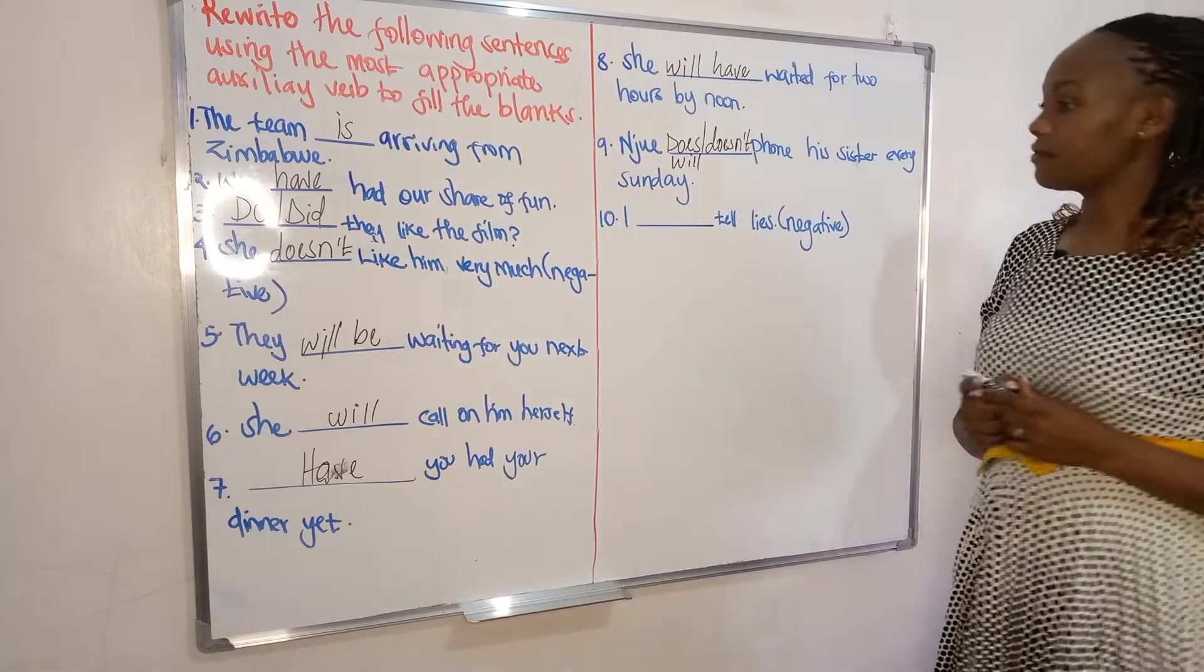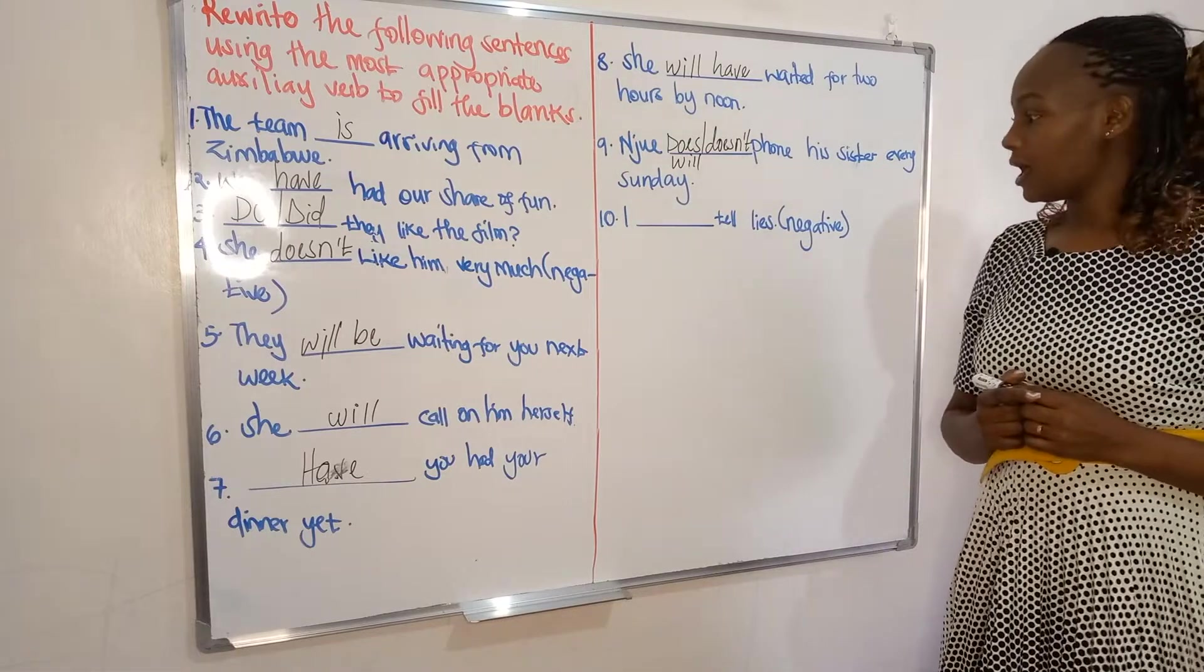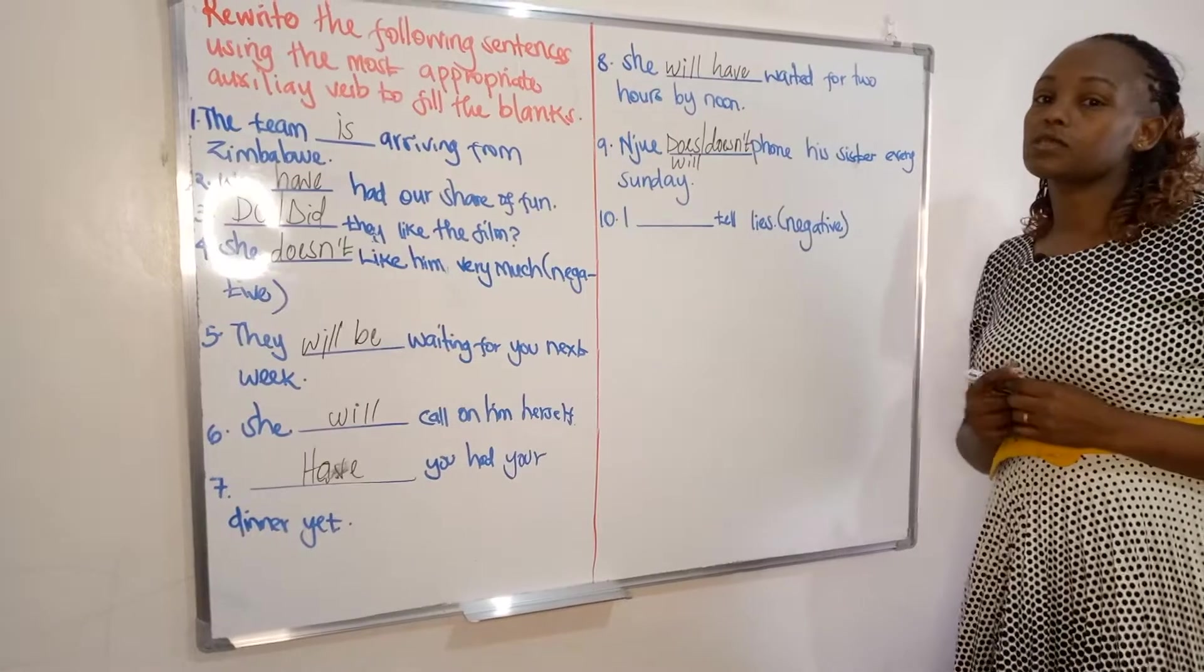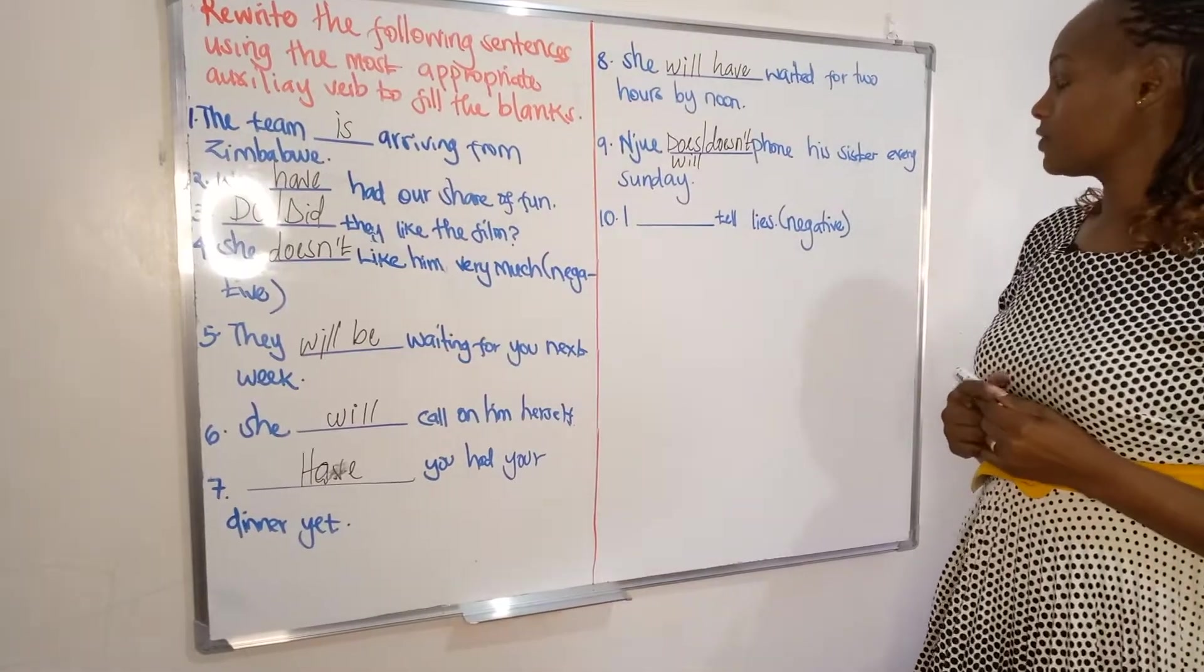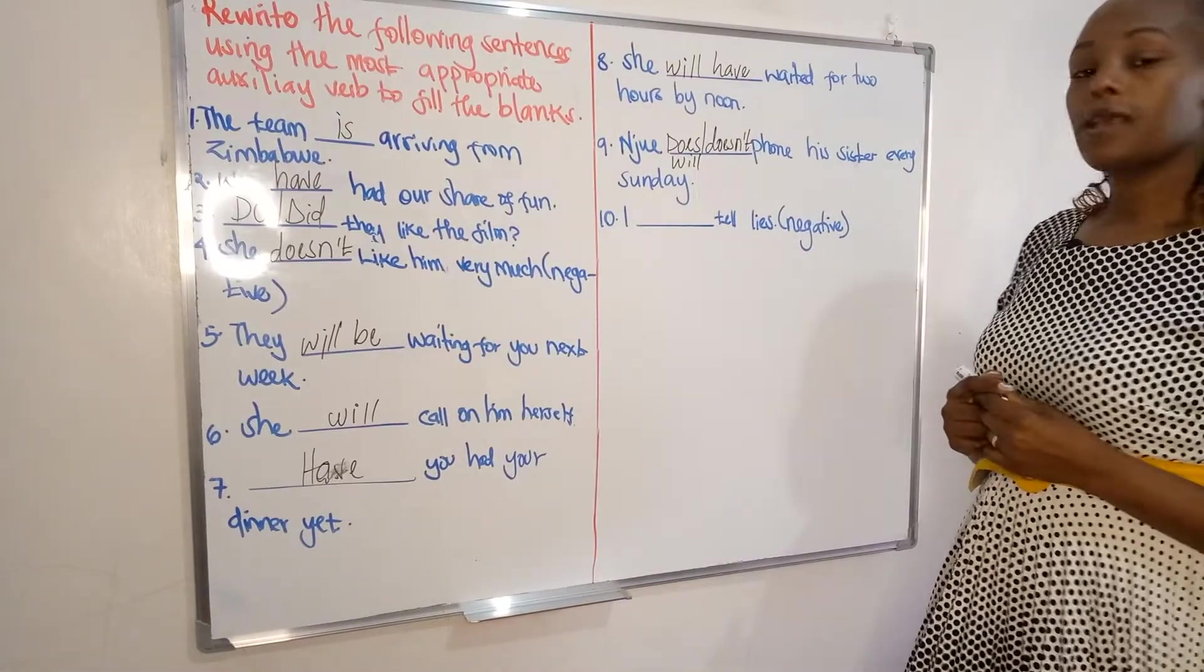And lastly, I dash tell lies. The sentence should be negative, so the word not should appear. I don't tell lies. That is it.